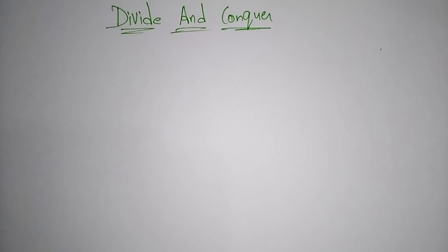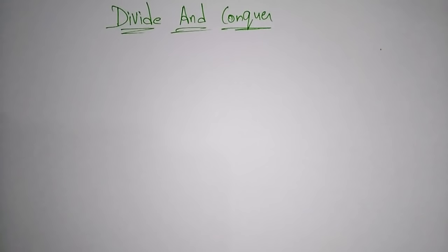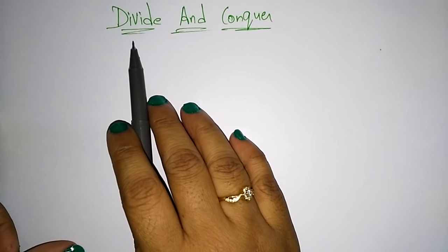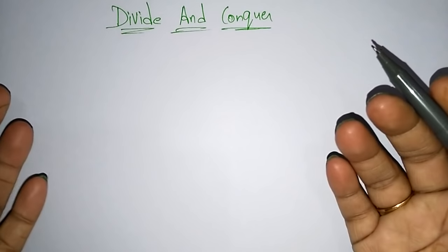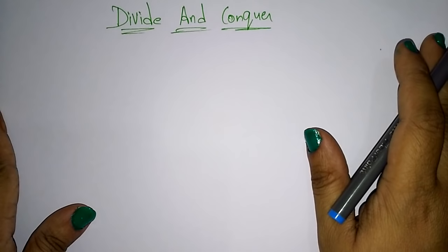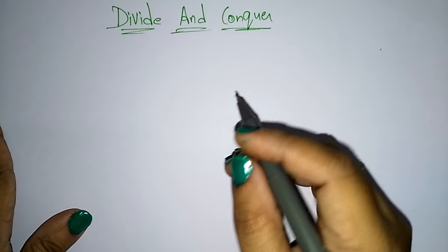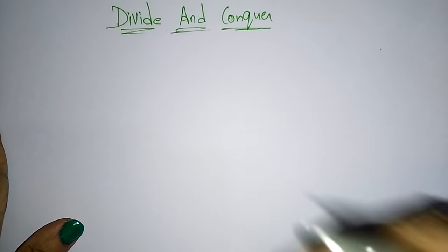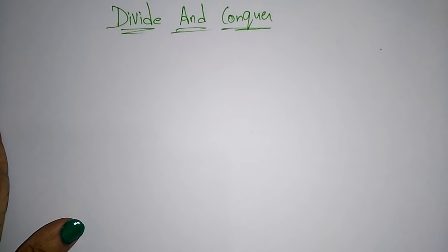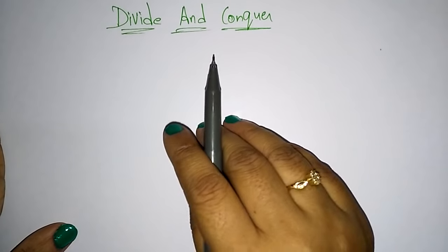Today we are moving to the next topic: divide and conquer. The name indicates that we have to divide something and combine something. Divide and conquer is a very important strategy in computer science — in programming languages and whatever is related to computer science, this divide and conquer is a very important strategy.